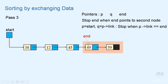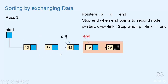In pass three, end will point to the node where p had stopped in pass two. We initialize p with start and q with p-link. We'll swap, then move p and q forward. No need of swapping. We'll move p forward. Now p-link has become equal to end. This is the end of pass three, and at the end of pass three this portion has become sorted.